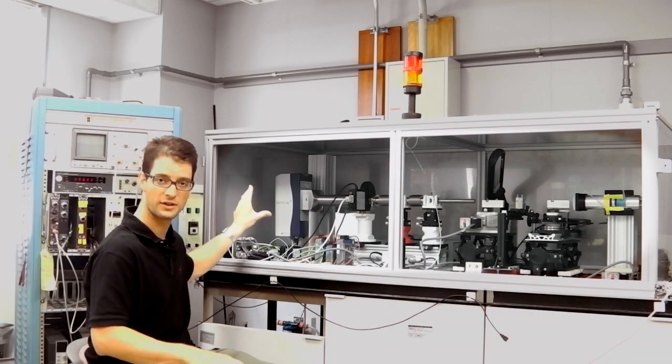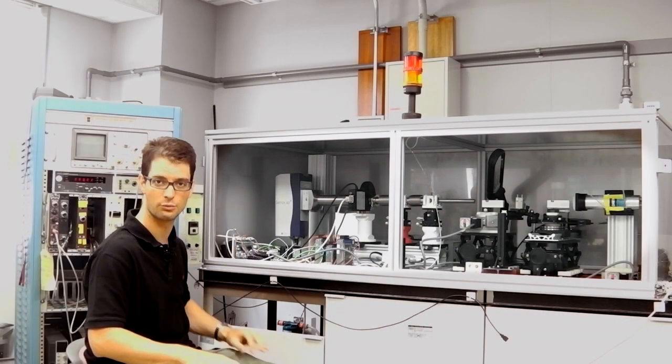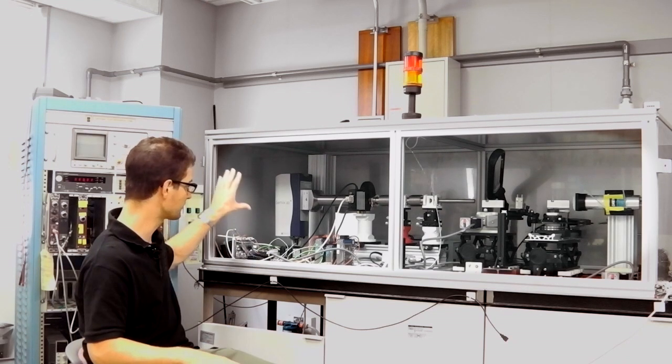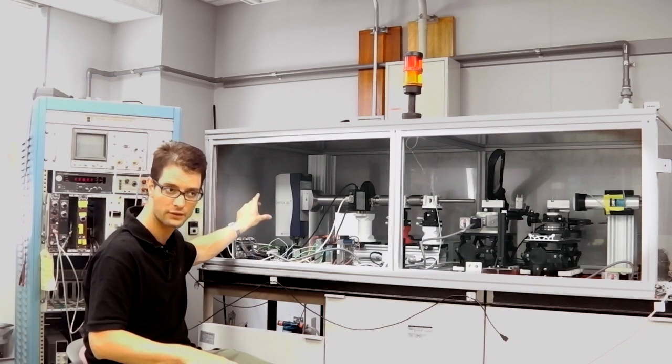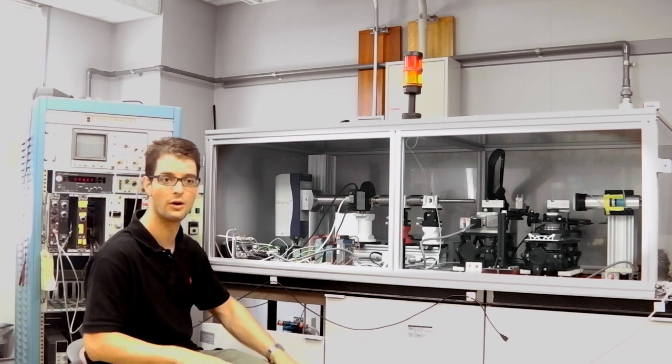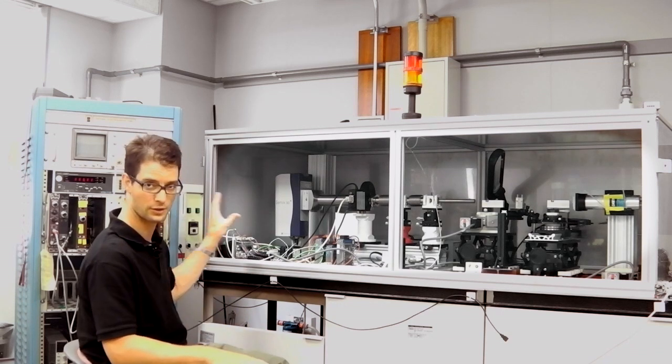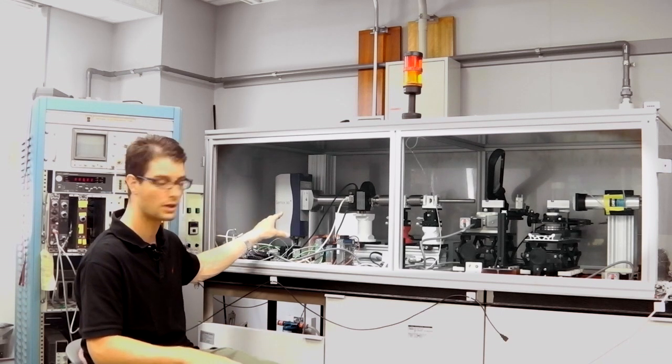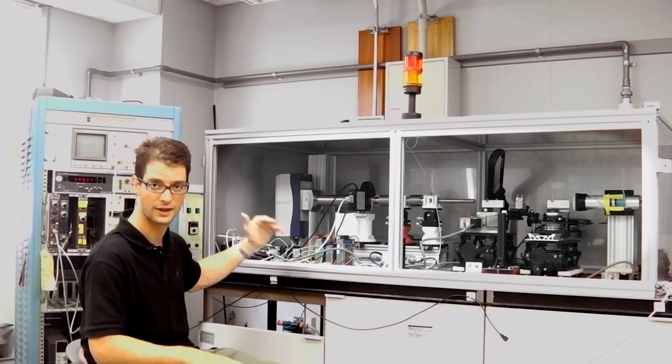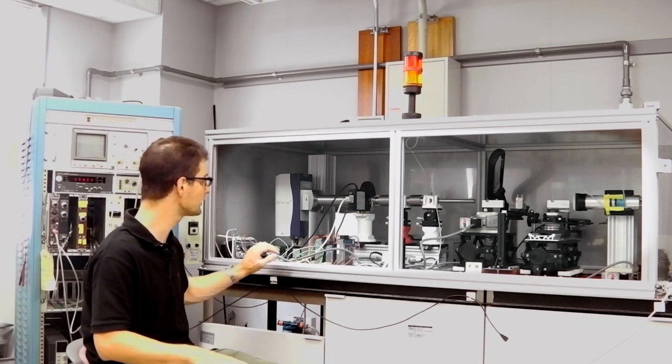This instrument is a little bit different than the instrument I showed before. One of the bigger differences is that it has a new source. This is a microfocus source, whereas the one on the small angle scattering machine is a rotating anode source. So this one is a lot more compact, a lot lower power. The flux is also slightly lower, but it's actually really good.